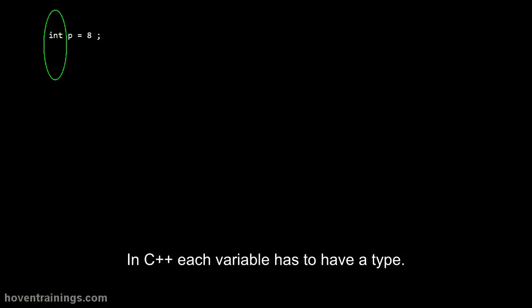In C++ each variable has to have a type. In this statement, the type of p is int.